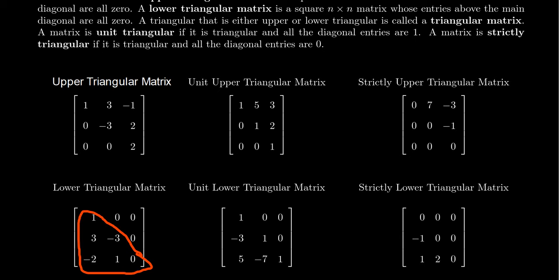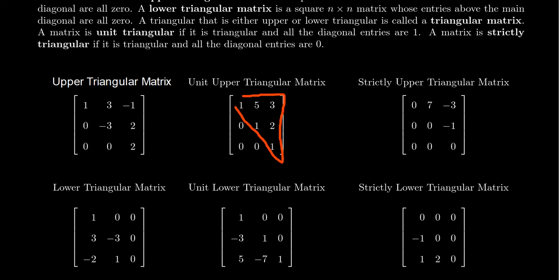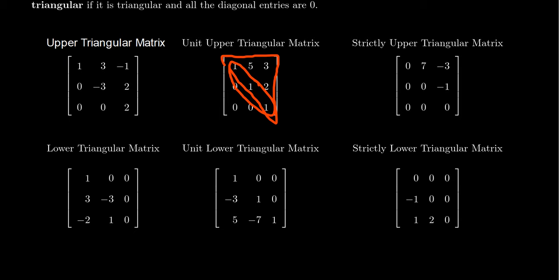There are some special types of triangular matrices we want to introduce. If we add the adjective 'unit' in front of a triangular matrix, that means we're requiring that the diagonal entries be one. So we say it's unit upper triangular if the diagonal entries have to be one, and similarly a unit lower triangular matrix is a lower triangular matrix but the diagonal entries have to be one. 'Unit' here describes the multiplicative unit, that is, one.